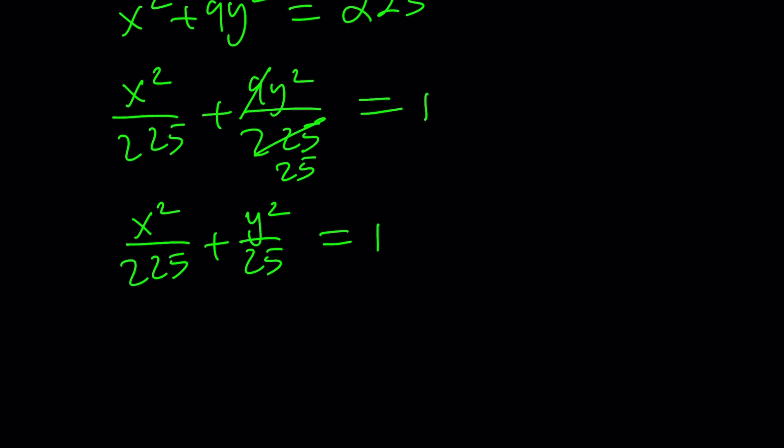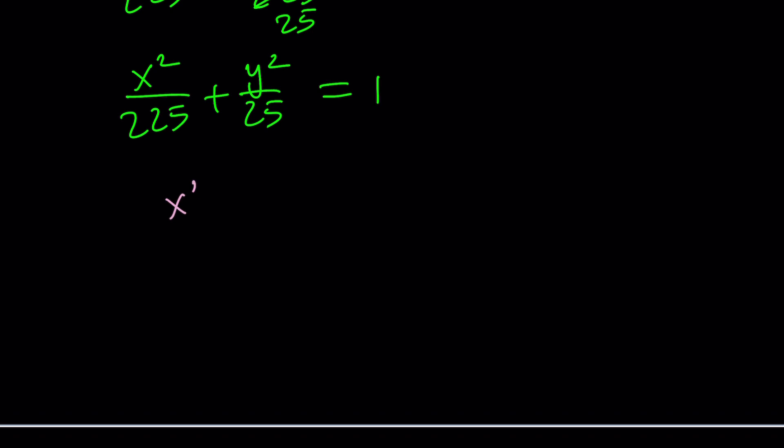If you think about the general form x²/a² + y²/b² = 1, if a and b are equal, then we can just use a common denominator. Replace a and b with r, we get x² + y² = r², and that's a circle. But this is not a circle because a and b are different.